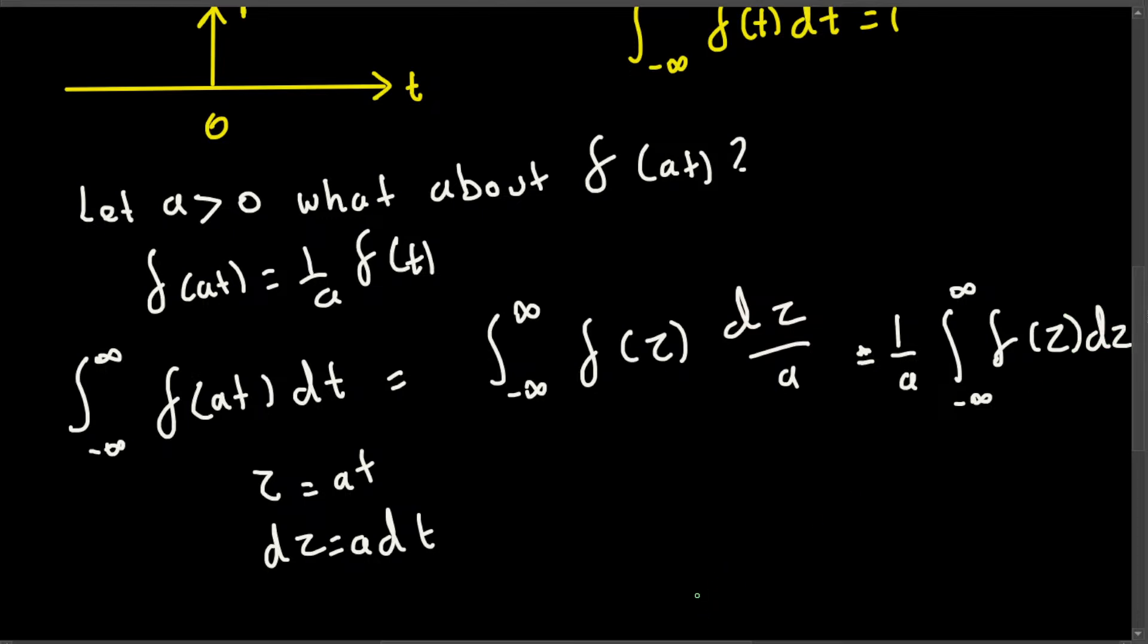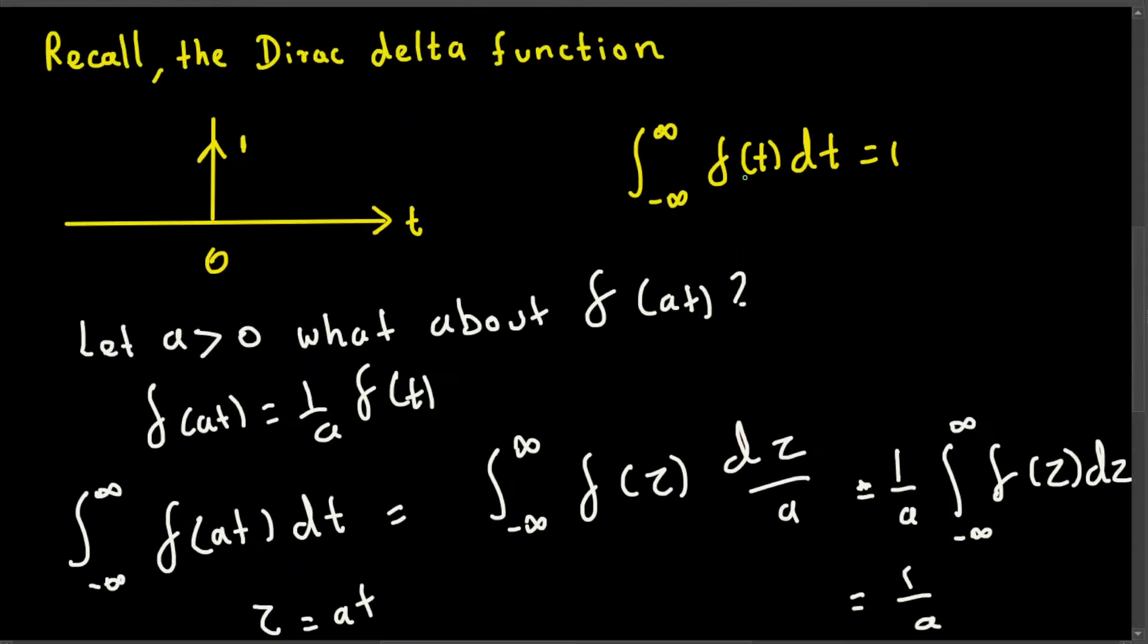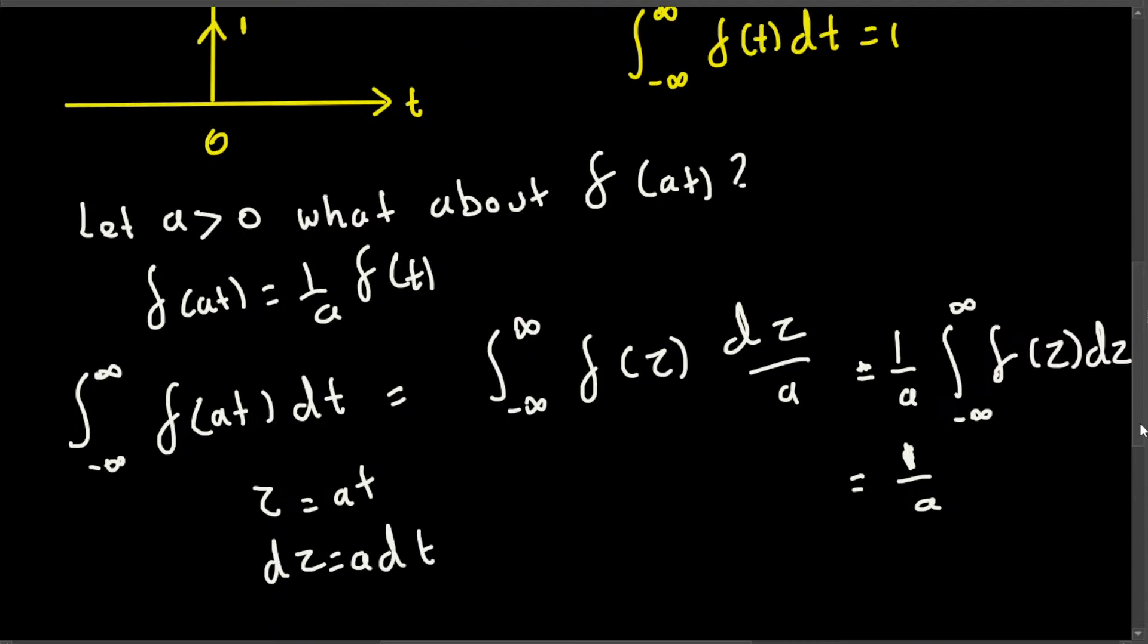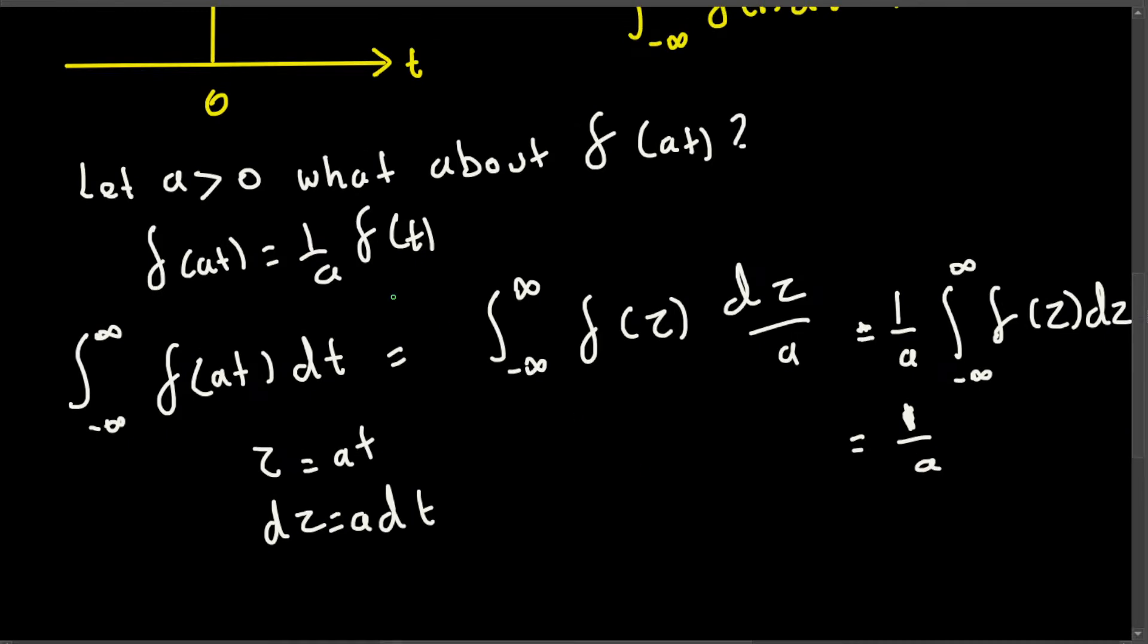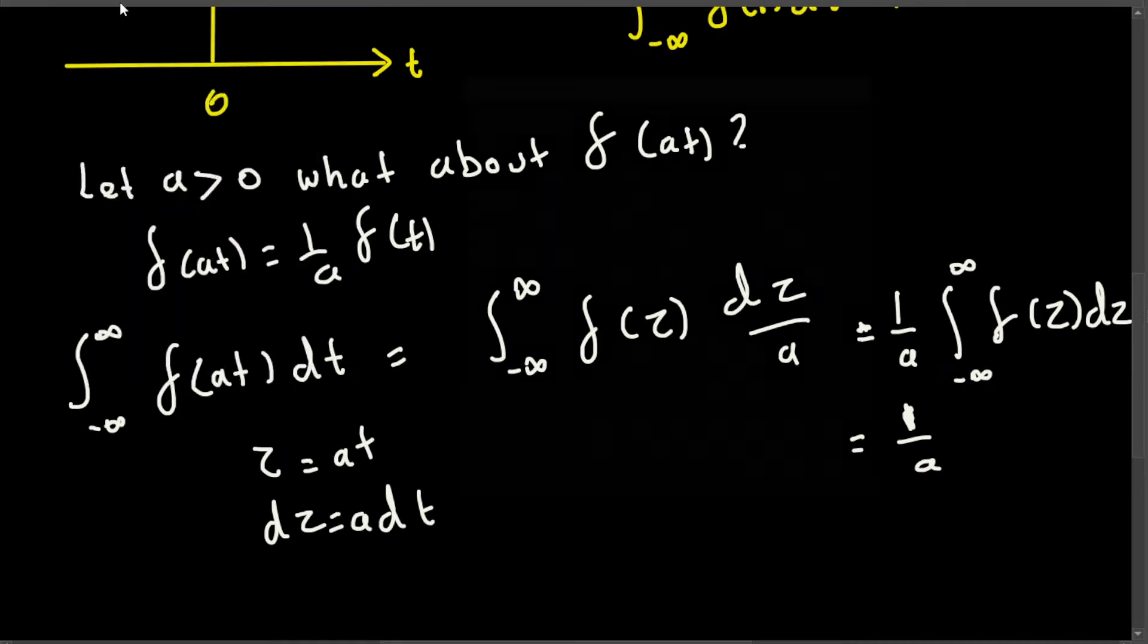From this we can say that this is equal to 1 over a, because if delta of t dt equals 1, then delta of tau d tau also equals 1. So only the constant remains outside and everything else is 1, so we proved that. Now if I go to a new page...